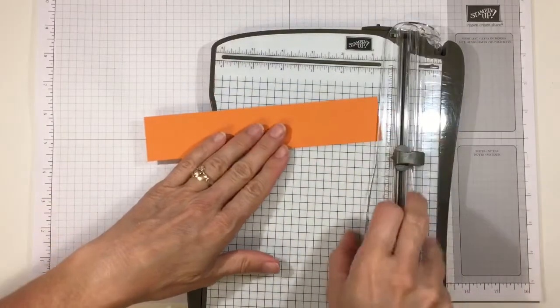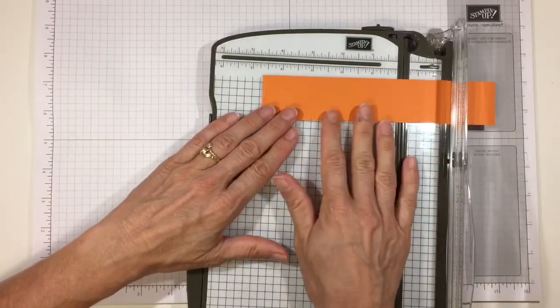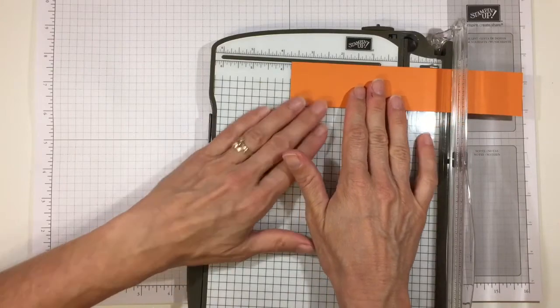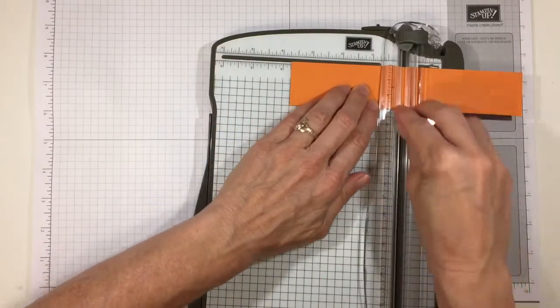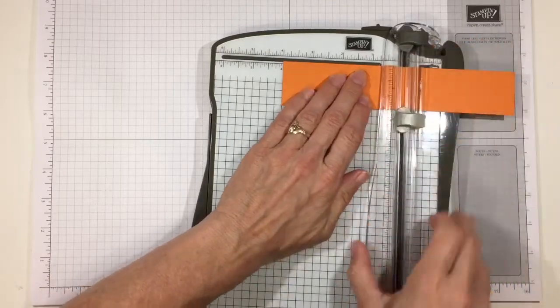The first thing we're going to do is score in two places. Put the seven and three quarter inch side up and score it at three and three quarters and at four. That's all the scoring we need to do.